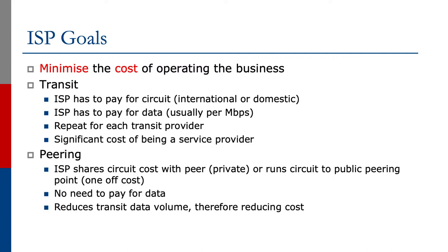Peering, on the other hand, means the network operator would share the circuit cost with the peer if it's a private peer, or runs infrastructure to the public peering point, which is a one-off cost. There's no need to pay for any data. It reduces the transit data volume and therefore reduces the transit cost.